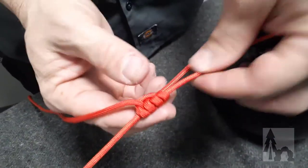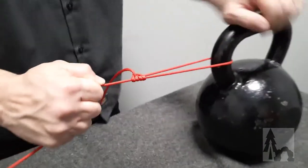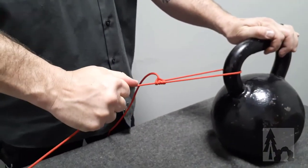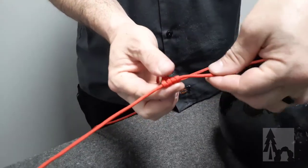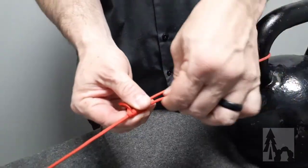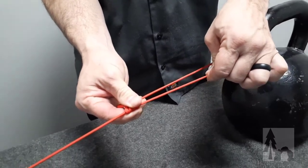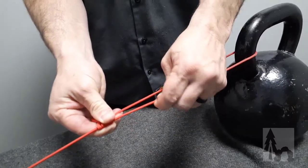Now just like the Prusik, this barrel will bite down on the standing line, so when I pull, the standing line will not let that loop collapse. But I can take the barrel and hold the standing line, and I can slide that further up the line, and it'll hold.